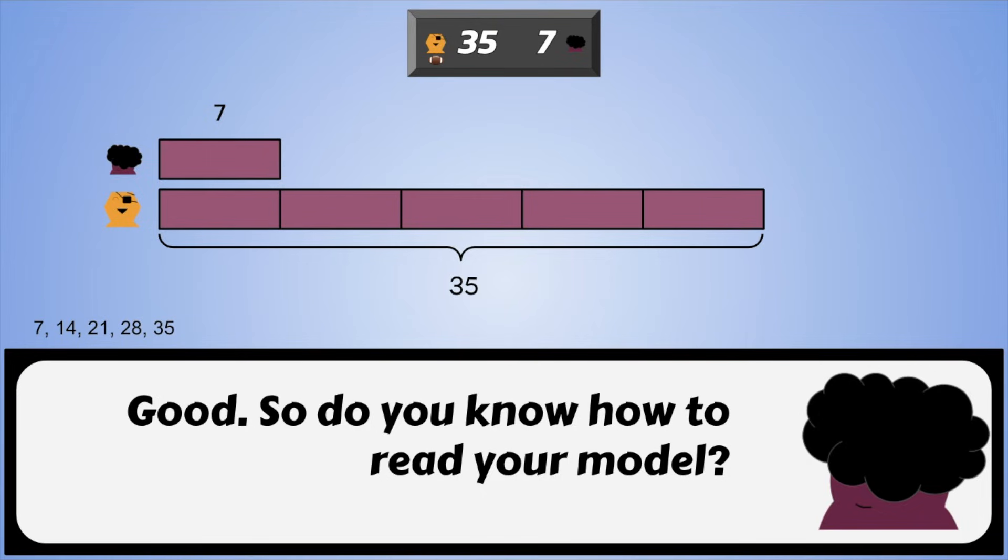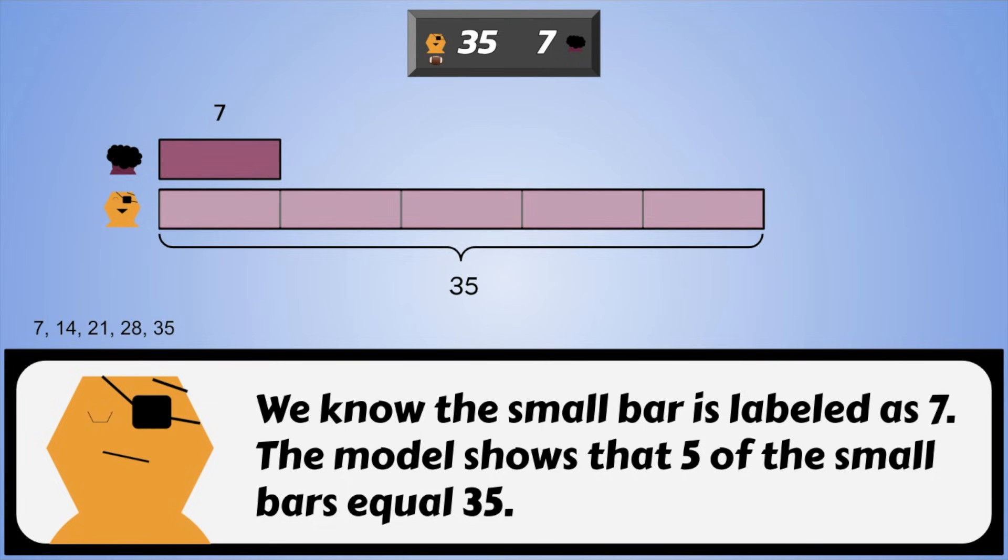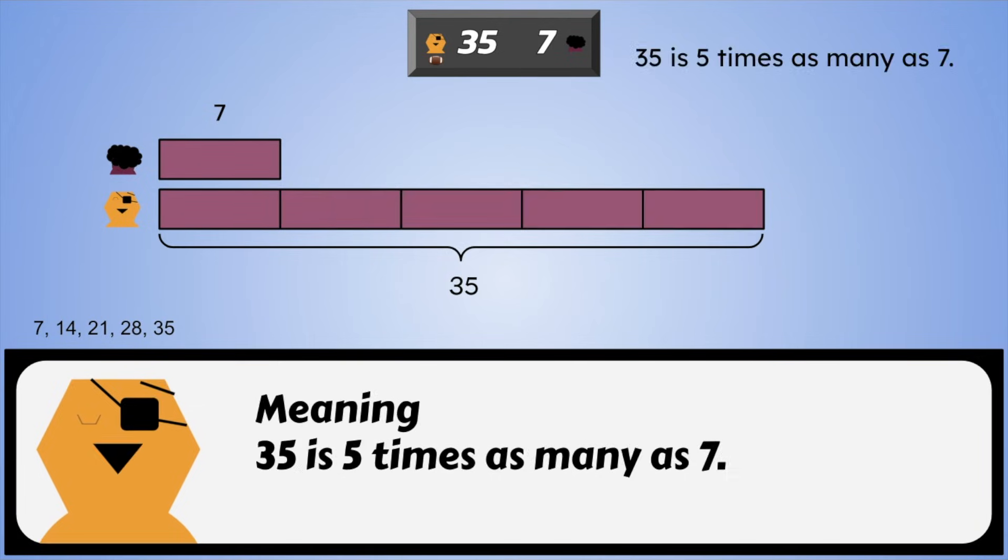Good. So, do you know how to read your model? We know the small bar is labeled as 7. The model shows that 5 of the small bars equal 35. Meaning, 35 is 5 times as many as 7.